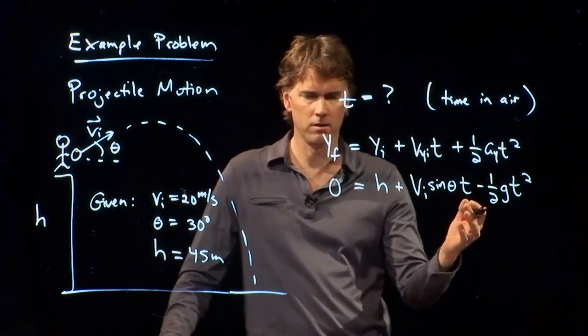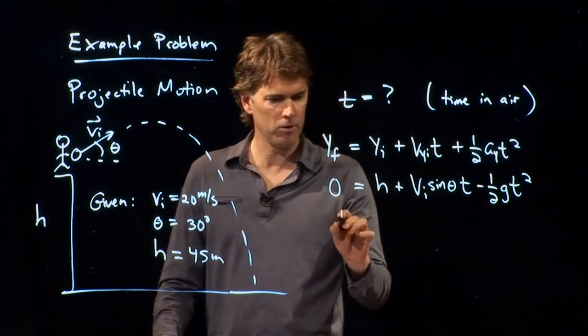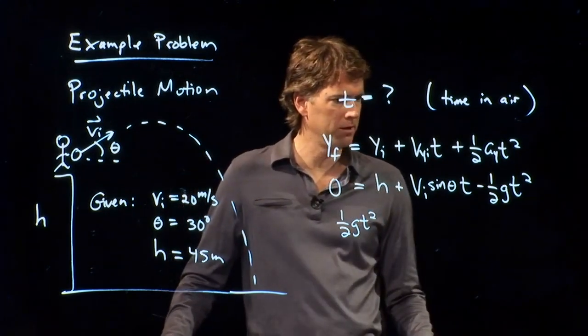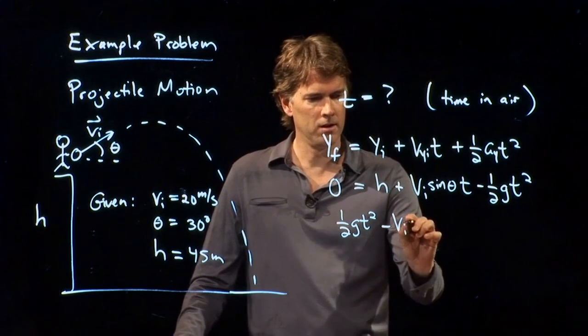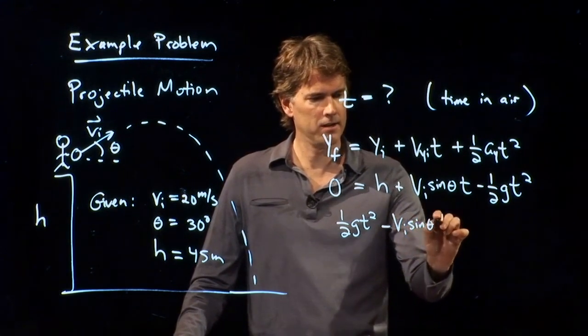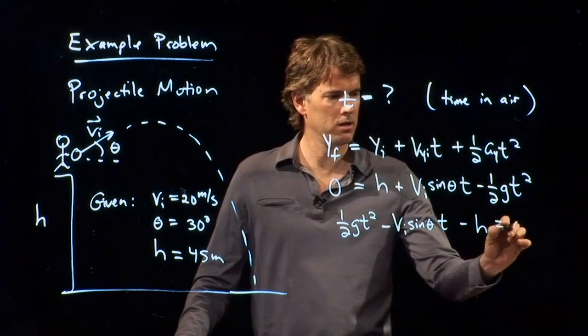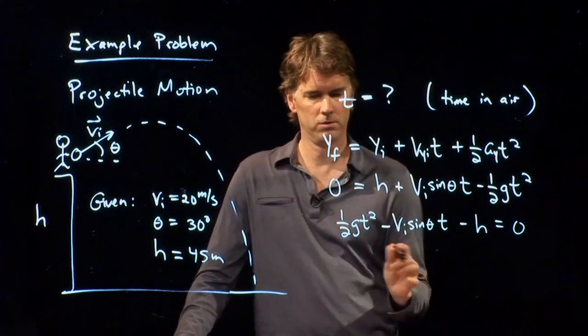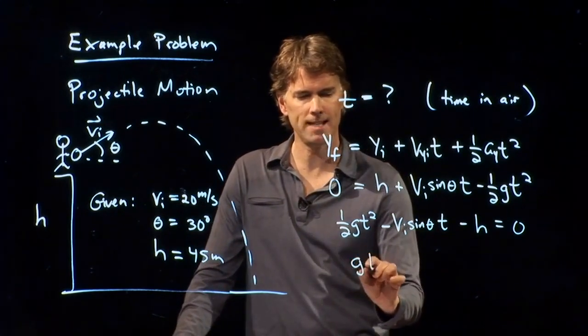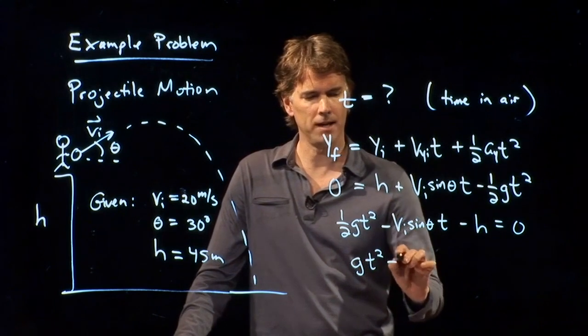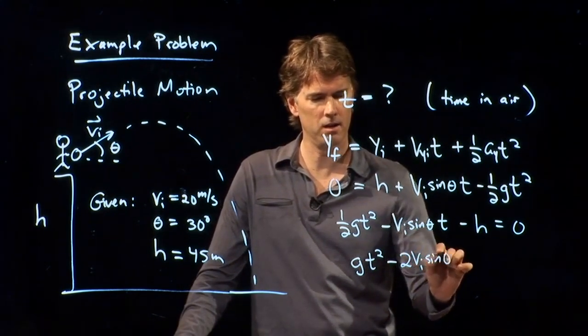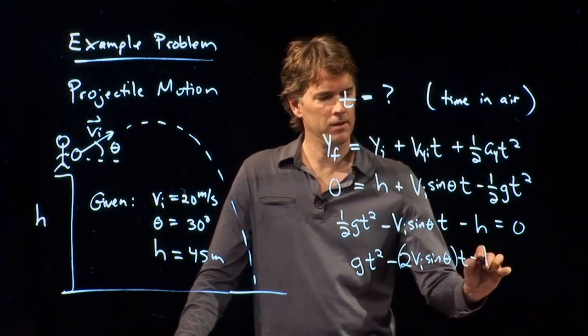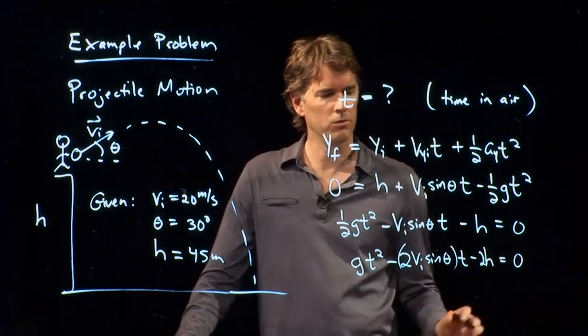And so look at this equation. This is a quadratic equation. We can rewrite it in a form that you are maybe happier with, which is one half GT squared minus VI sine theta times T minus H equals zero.